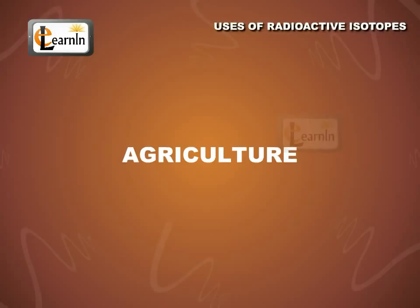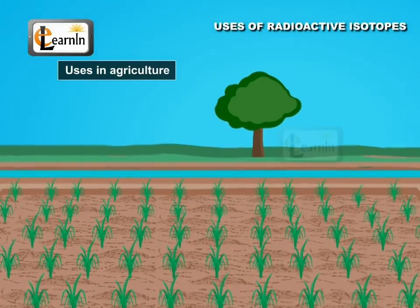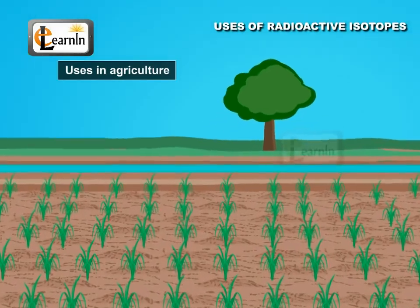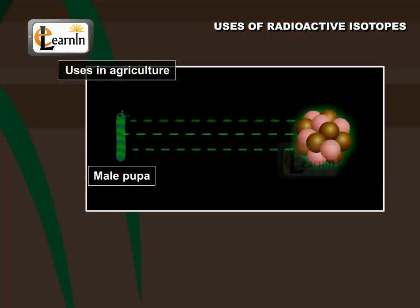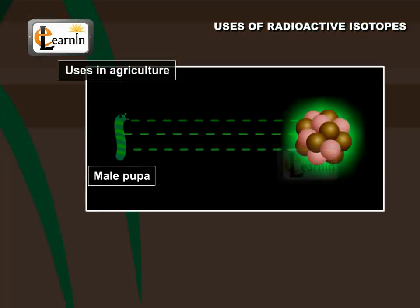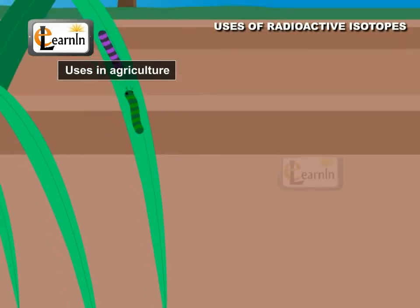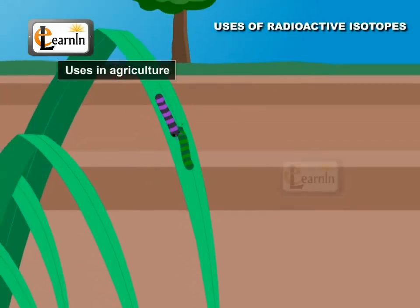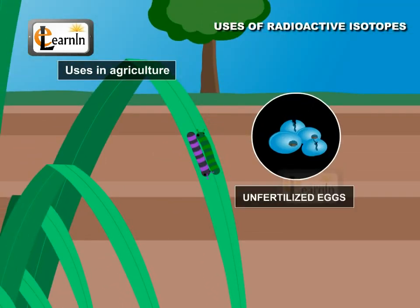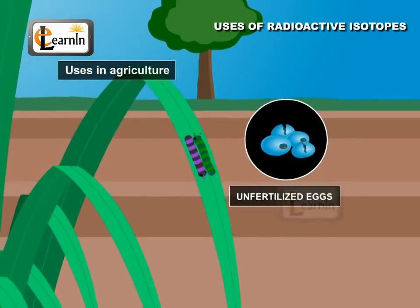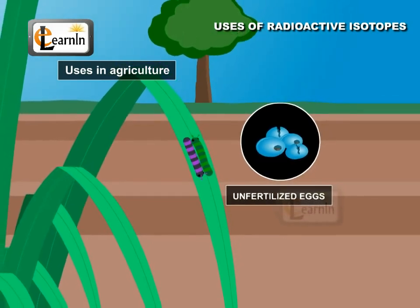Agriculture: radiation is also used in agriculture to sterilize male pupae of an insect that could damage crops. These males are usually released to mate with females which produce unfertilized eggs. This is effective in pest control as it reduces the population of insects.